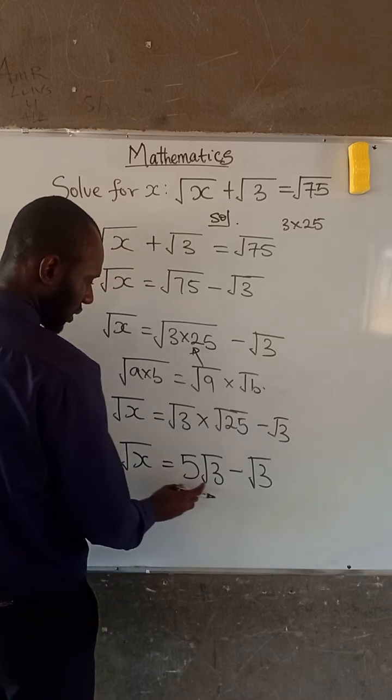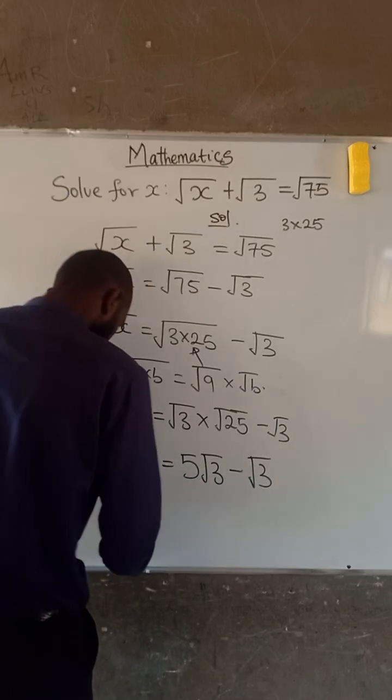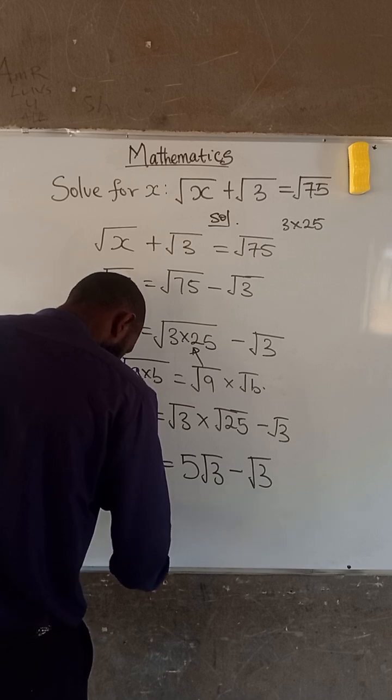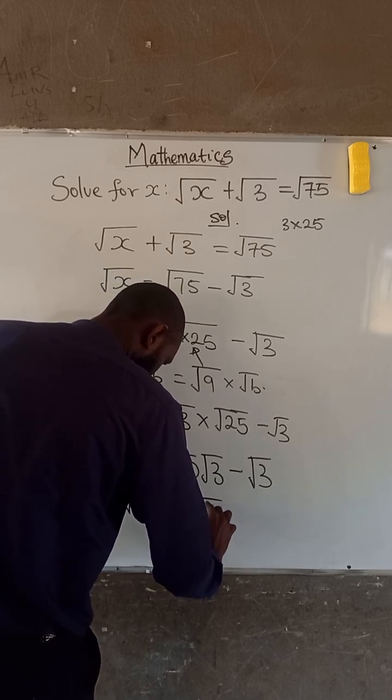So 5 root 3 minus root 3 is equal to 4 root 3. So we have root x equal to 4 root 3.